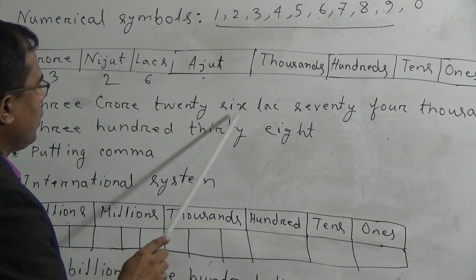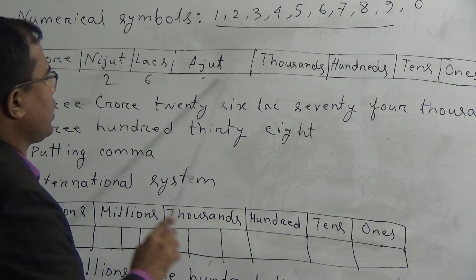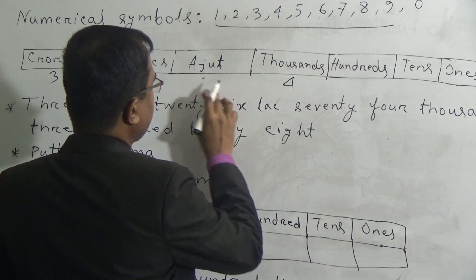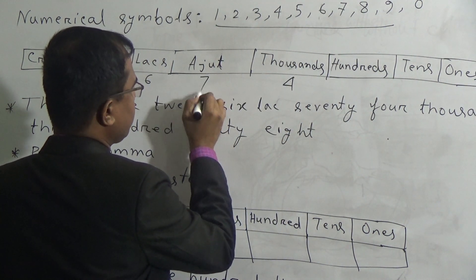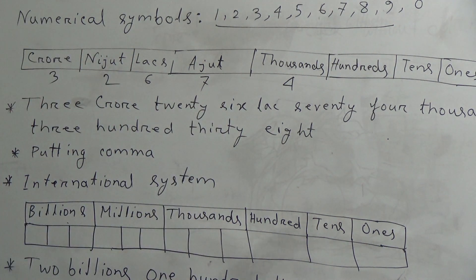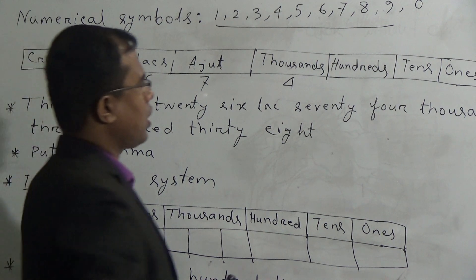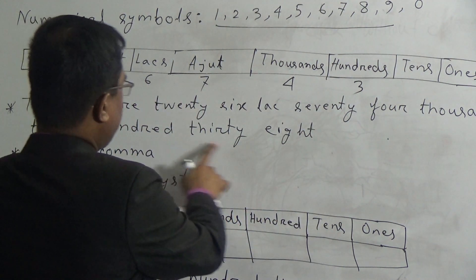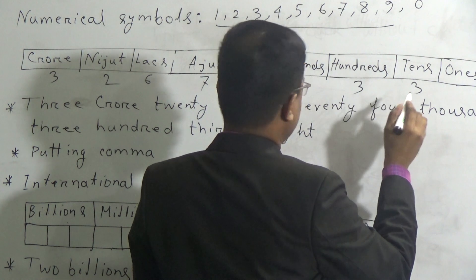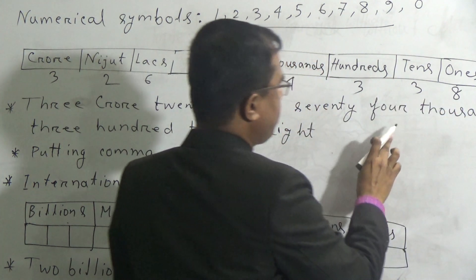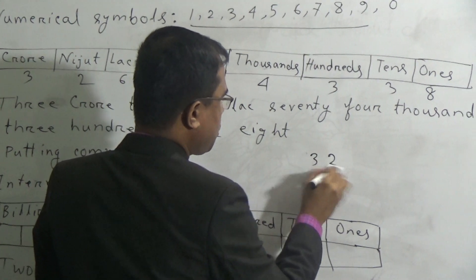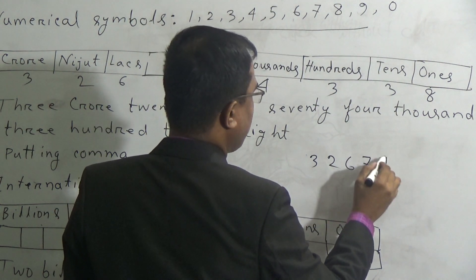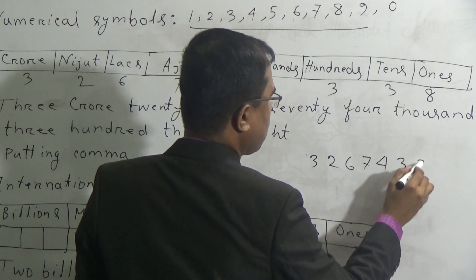Then 74,000 — we write 4 in the 1000s place and 7 in the ten-thousands place. Then 338 — in the 100s place we write 3, in the 10s place we write 3, and in the 1s place we write 8. So the number is: 3, 2, 6, 7, 4, 3, 3, 8.